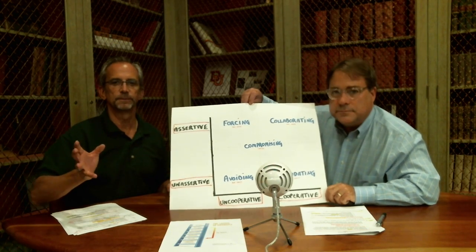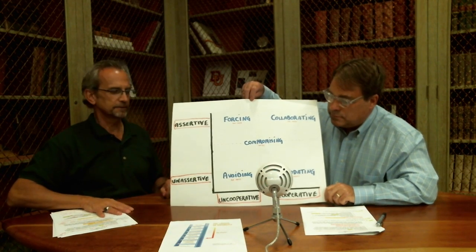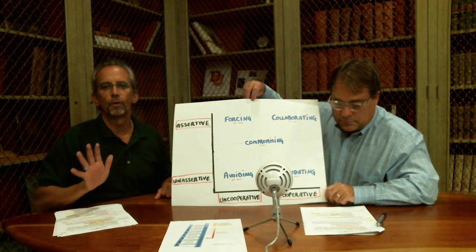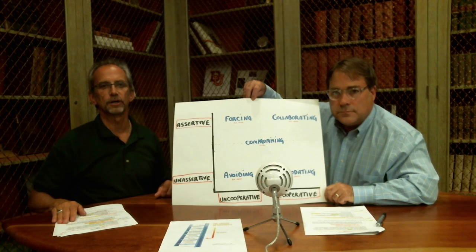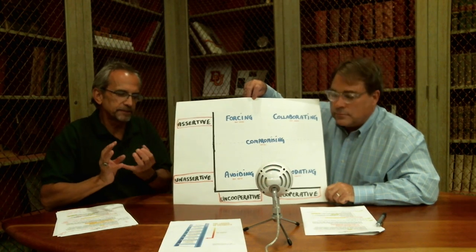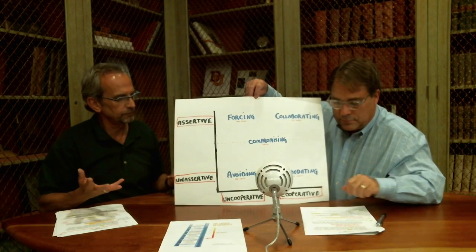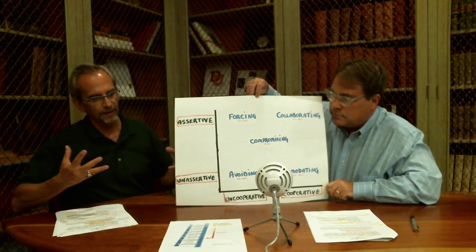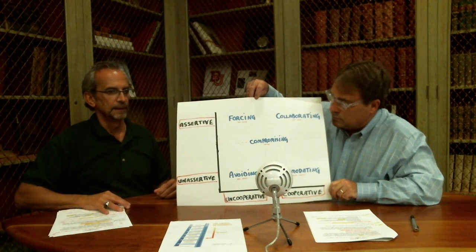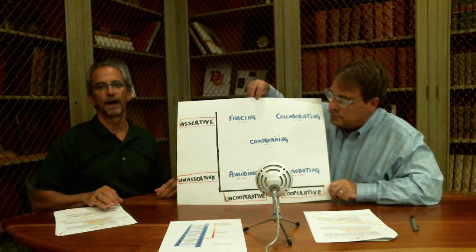Thomas Kilman would say that of the five styles, one is more learned than the other four — not innate, but learned. Maybe for some people there could be two combined together. But typically how you grew up, whether it was your parents, the people that raised you, the school system, or your friends — as a young child you probably start developing your conflict style.